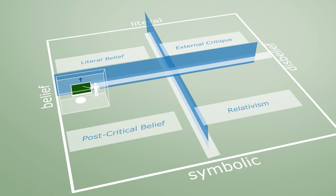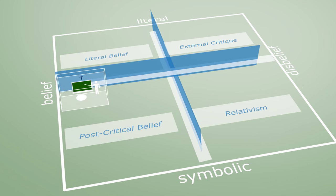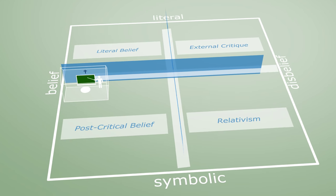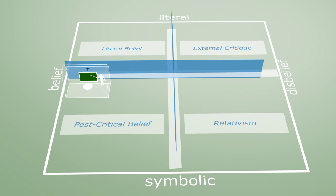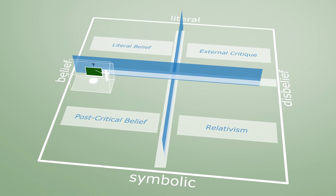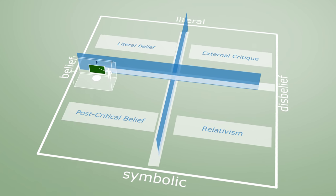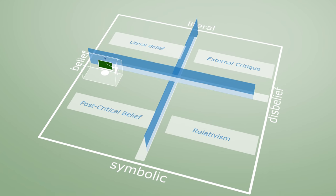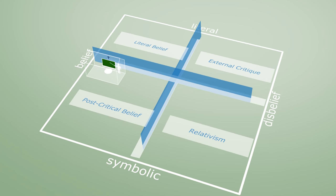Research also shows that the post-critical or symbolic belief style is the most fruitful for developing the Catholic identity of a school in our current society. Only people who relate to belief in a symbolic way are able to contribute to a Catholic school identity that is true to the authentic experience of faith, and plausible in today's context at the same time.